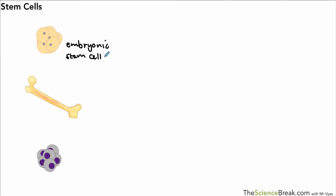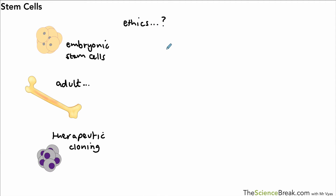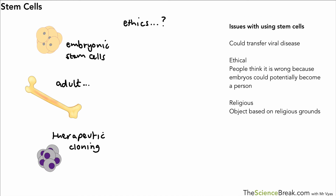So we've gone through three possible sources of stem cells: embryonic stem cells; adult stem cells, one source being bone marrow but also skin and other places; and therapeutic cloning, which we've just gone through. While we have various sources of stem cells, we do have to think about ethical issues relating to their use.